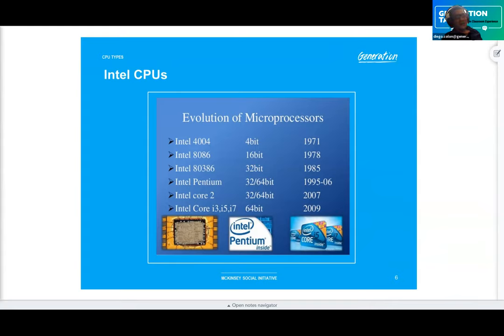In the 90s came the key players — the 64/32-bit processors. Finally in 2009, the i3, i5, and i7 arrived as pure 64-bit processors.